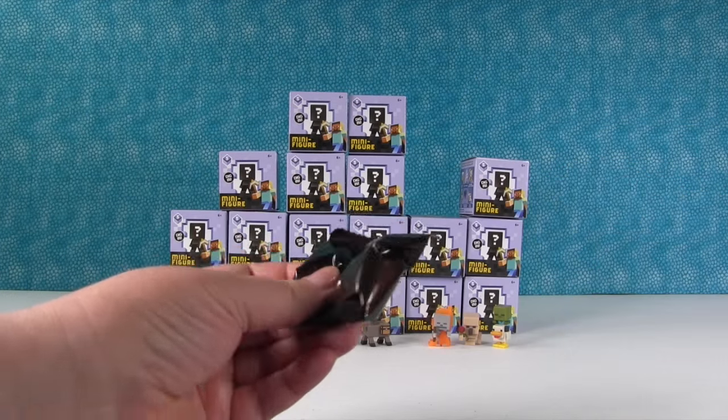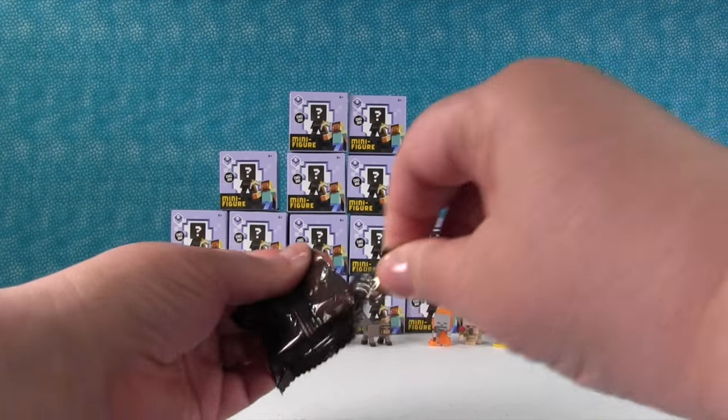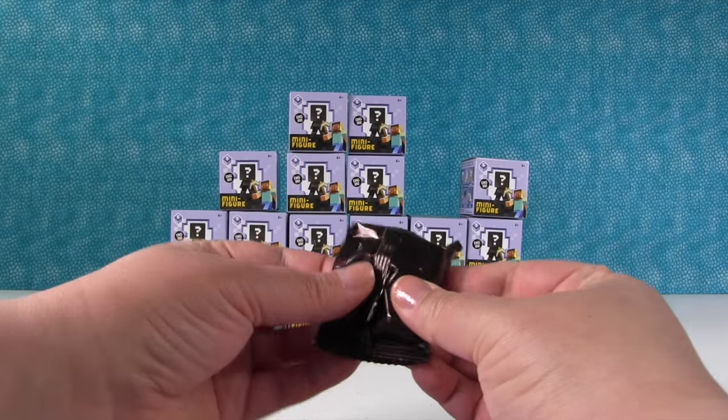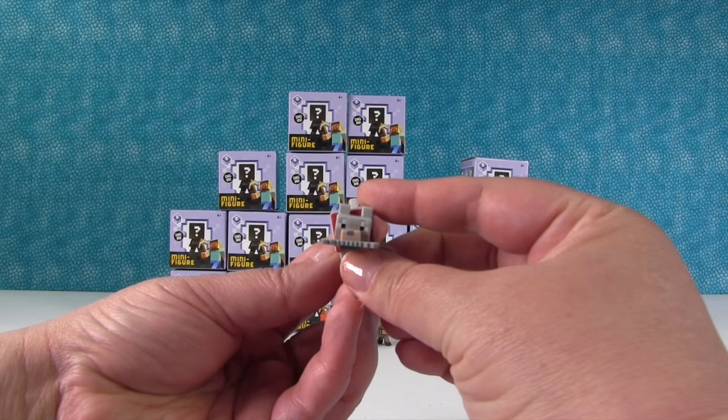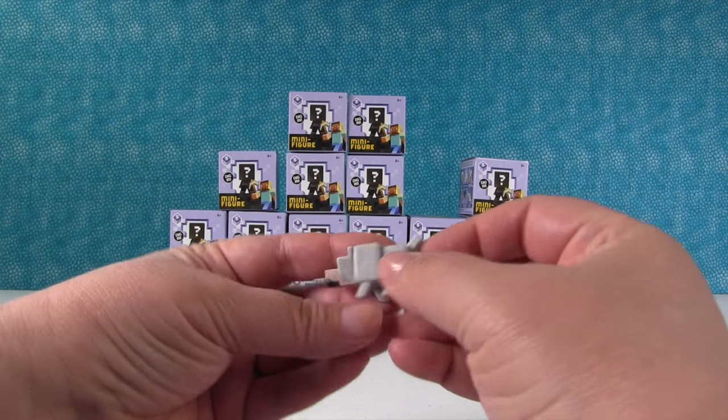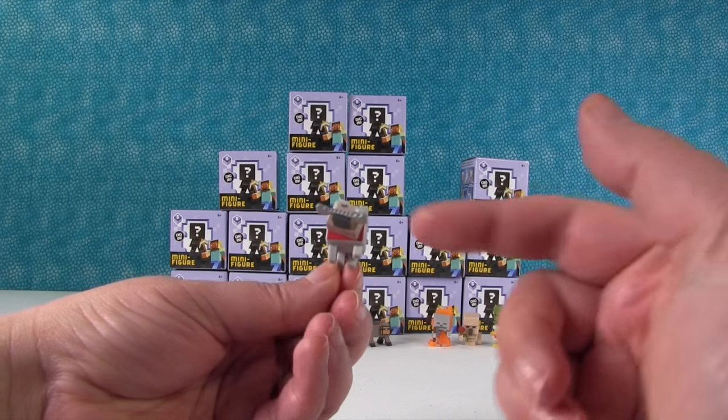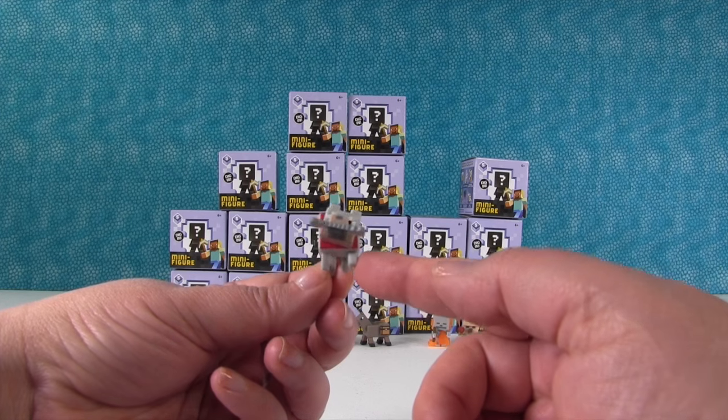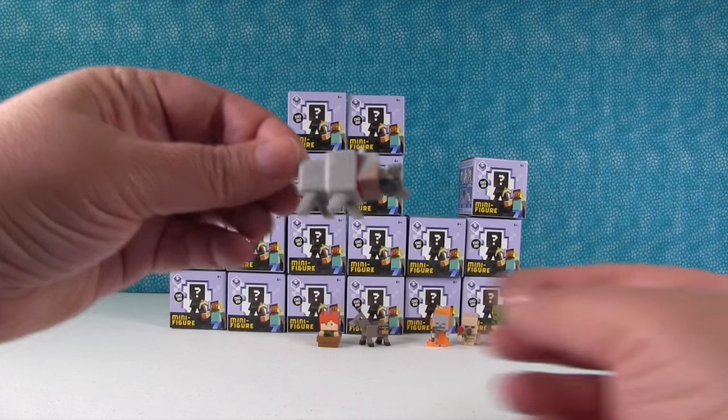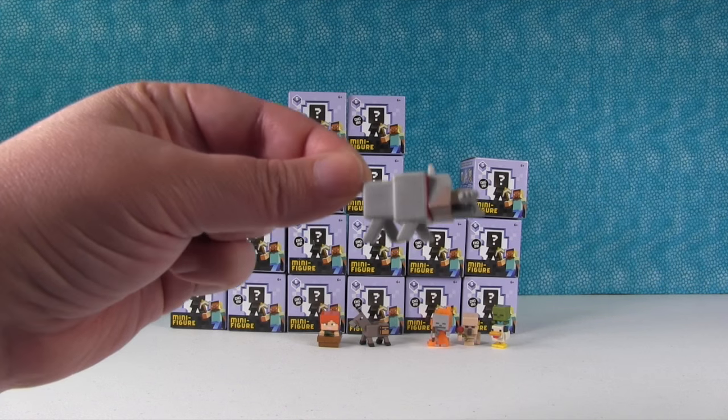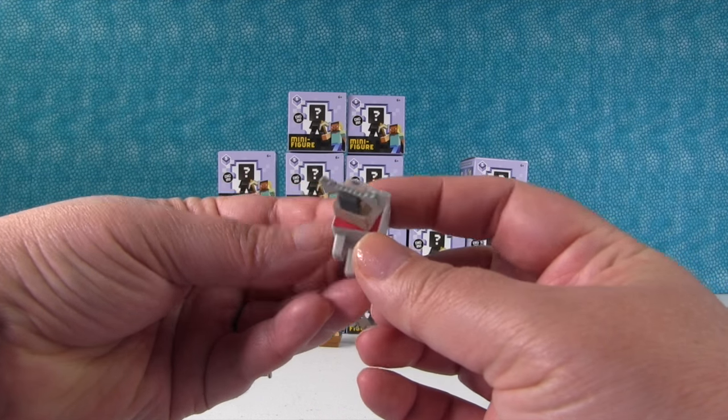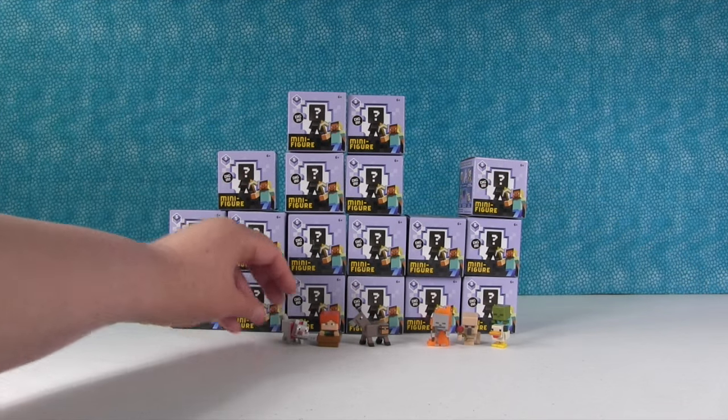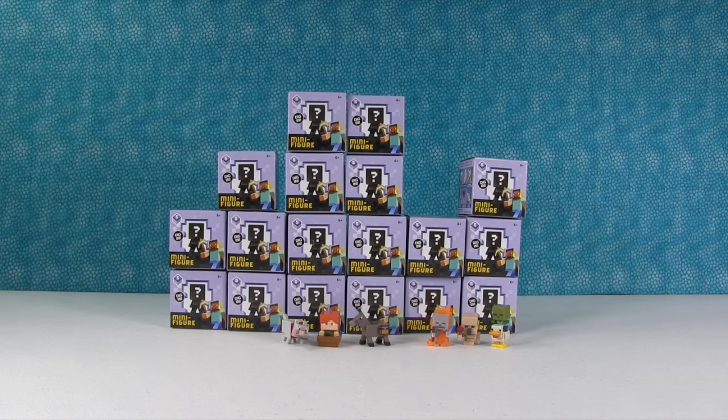I don't know why the zombie's riding the chicken. Probably to get to the other side. Oh, I have the wolf with the bone! So he's cool. Again, the figure isn't straight on. He has his head tilted and his legs are in a walking position. That's neat. And there's his little bone. I think that's the third wolf in the different series.